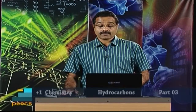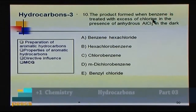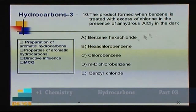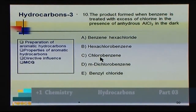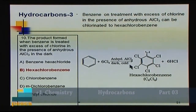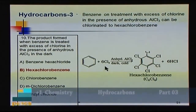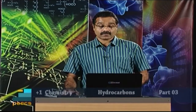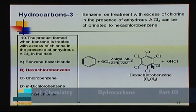Question 10: The product formed when benzene is treated with excess chlorine in the presence of anhydrous aluminum chloride in the dark is: A) benzene hexachloride, B) hexachlorobenzene, C) chlorobenzene, D) meta-dichlorobenzene, E) benzyl chloride. In the presence of anhydrous AlCl₃, the reaction is electrophilic substitution, and with excess chlorine all six hydrogens are substituted, giving hexachlorobenzene. Answer: B.